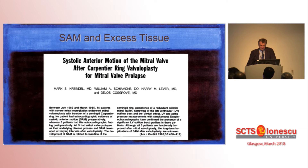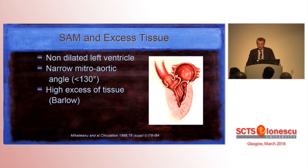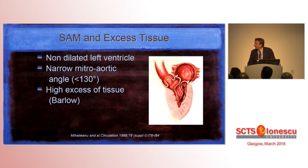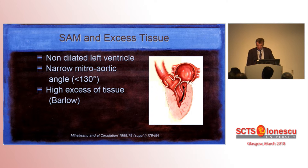A colleague of ours, a cardiologist, did a study and found that there were three factors leading to SAM: one was the small left ventricle, a narrow mitral-aortic angle, and high excess of tissue. This started the whole discussion about excess of tissue, especially in height.